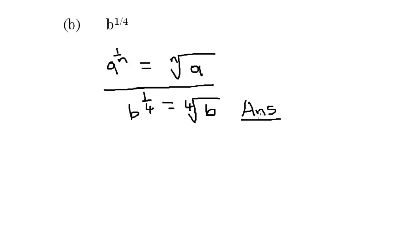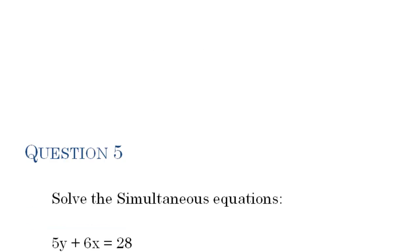So in approaching indices, recall the law, identify which law applies to the question, and use that law to arrange the equation appropriately. Question 5: Solve the simultaneous equations 5y plus 6x equals 28, and 2y plus 3x equals 13. Let's use elimination to solve this equation.